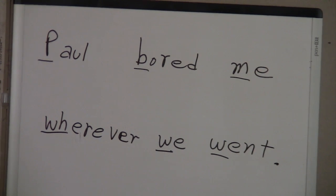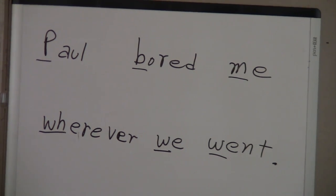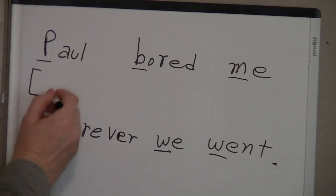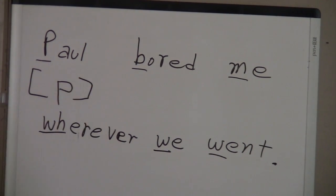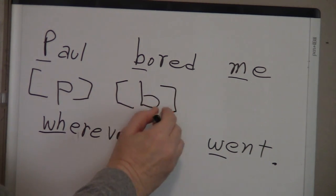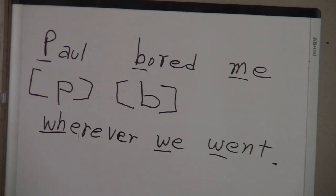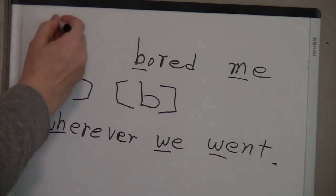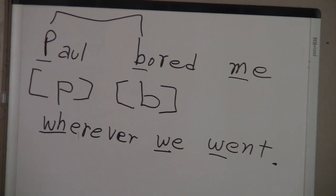Our first group of consonant sounds are: puh, buh, muh, and wuh — all made with the lips. The phonetic symbol for the puh sound, regardless of how it's spelled, is a lowercase p. The phonetic symbol for the buh sound is a lowercase b. These two sounds are cognates — puh is voiceless and buh is voiced.